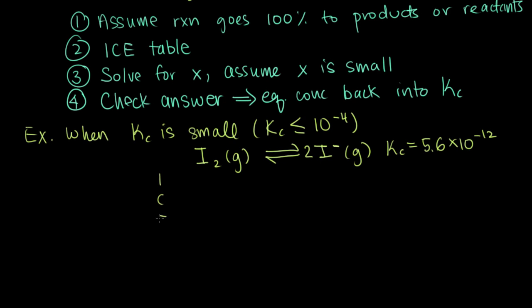We have a little bit more information about our reaction. We know the initial concentration of I2 gas is 0.45 molar, and the initial concentration of I minus is 0. Based on this, we're going to go through the steps for using the small x approximation.